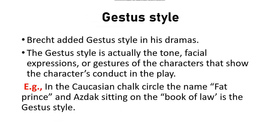Fourth is gestus style. Brecht added gestus style in his dramas. Gestus is actually the tone, facial expressions, or gestures of the characters that show the character's conduct in the play. For example, in Chalk Circle, the Fat Prince sitting on the book of law is a gesture — a gestus — and since we know about the book of law, there is hidden meaning in that image.